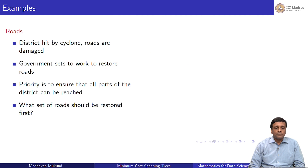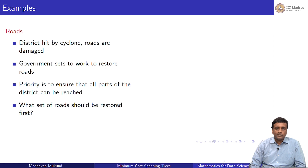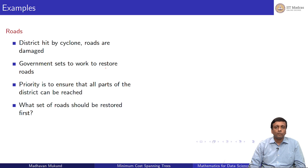To motivate this problem, consider a district hit by a cyclone where many roads are damaged. The first priority is to restore roads, but you want to do so in a way that everybody can move around as quickly as possible. You want to prioritize roads so that everyone is connected to everyone else as fast as possible — not sequentially, but maximally restoring connectivity across the district.